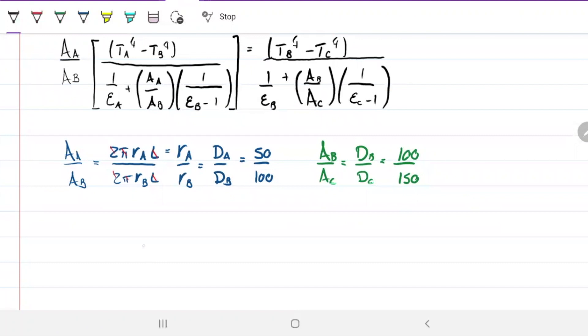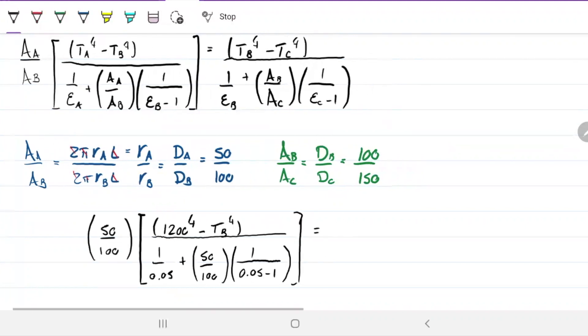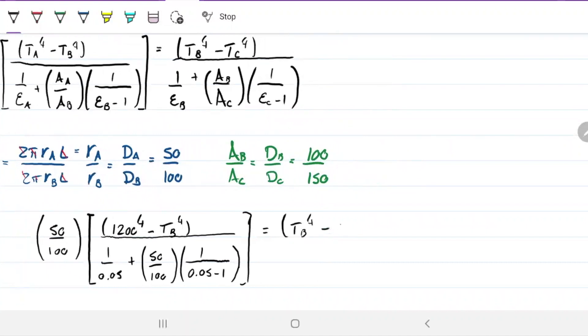So we can do one more step here. We can plug in the numbers. So let's go ahead and plug in the numbers for this problem. So we have 50 over 100, 1200 to the fourth minus TB to the fourth, divided by 1 over 0.05 plus 50 over 100 times 1 over 0.05 minus 1.